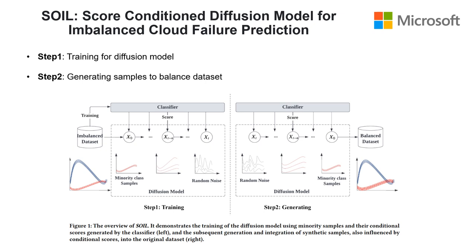SAWYER comprises two key steps: training and generating. In the training step, we leverage high-quality samples and their corresponding probability scores as inputs to train the diffusion model. During the generation step, we guide the diffusion model to produce high-quality samples by specifying particular probability scores associated with samples positioned near the classification boundary.